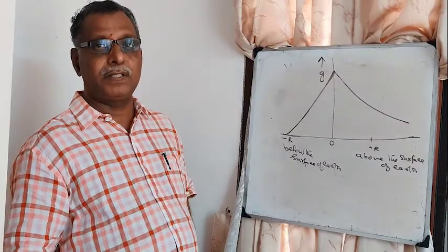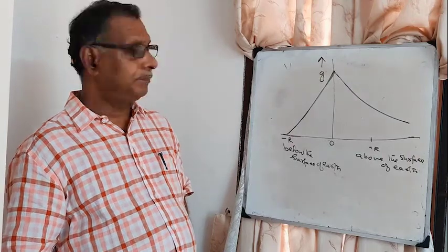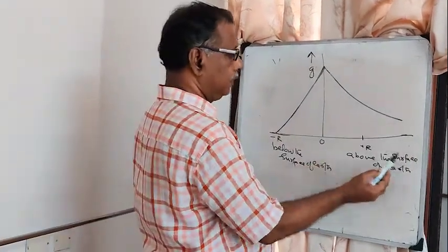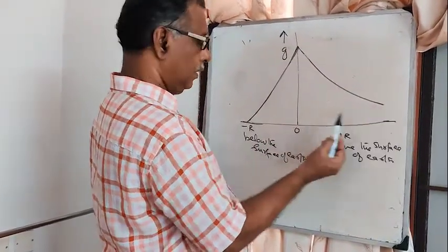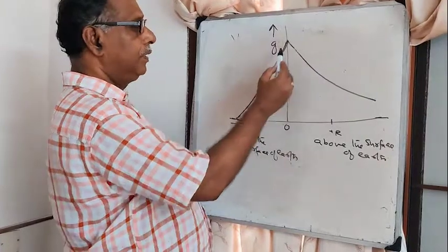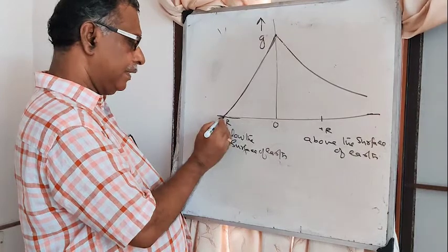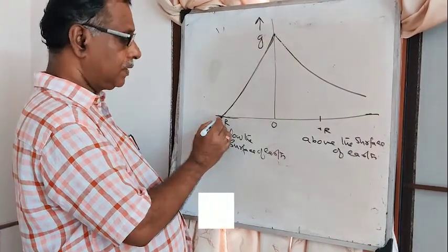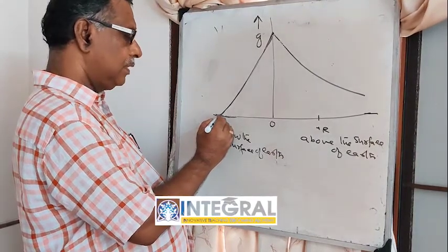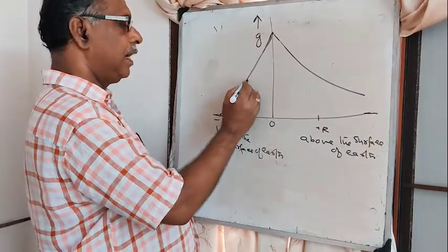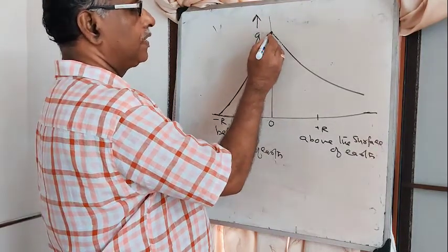In the graphical representation of variation of g with height or depth: above the surface of the earth, the variation is a curve; below the surface, it is a straight line. From the graph we can confirm that at the centre of the earth g equals zero, and at the surface g is maximum.